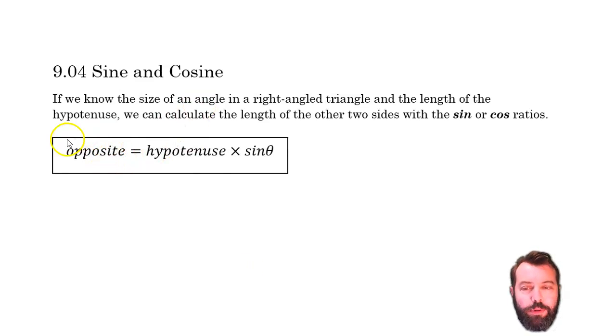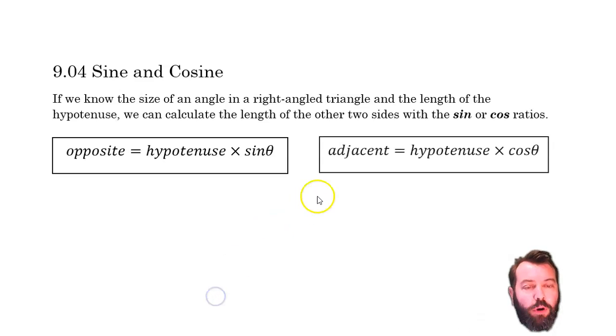Now, if I want to find the opposite side, I use sine. Sine goes with opposite, and I find the length of the opposite side by multiplying the hypotenuse by the sine of the angle. If I want to find the adjacent side, I use cos, hypotenuse times the cos of the angle. So sine and cos we use to find the opposite or the adjacent.